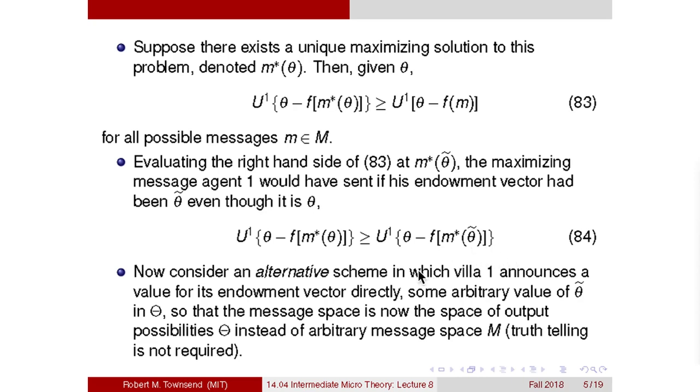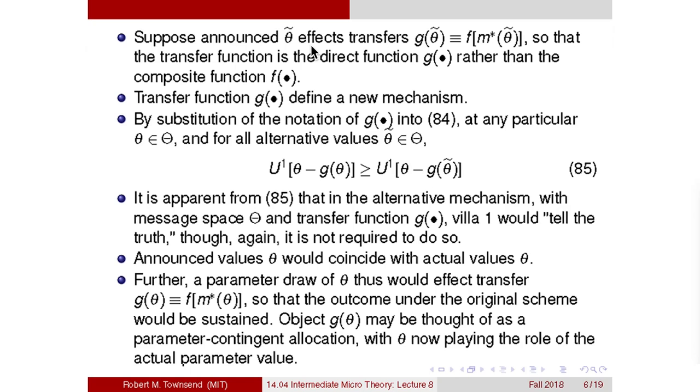Are you with me so far? So these are just simple statements of maximization and notation. Now we're going to make a bigger move here, although it seems rather innocuous. We're going to change the message space, and we're going to change the allocation rule. The way we're going to specialize the message space is to require that the agent announce values of theta. They're still not seen by the monastery agent two, but the message space is my output was high this year, my output was low, etc. For as many possible values of endowment as there might be. So we change the message space. The next thing we do is change the transfer rule. Well, for one thing, we have to define the transfer rule over messages about theta. So we denote that g of theta, but we're not going to change the rule. We're going to define g to be the same function f, but f used to operate on abstract messages, whereas g operates on messages about the actual endowment.